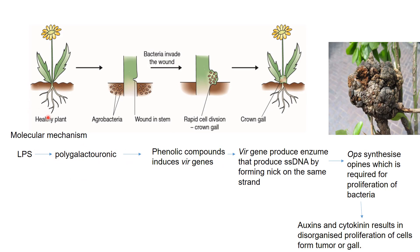The mechanism of how crown gall disease progresses: the healthy plant has no bacterium. Agrobacterium tumefaciens attaches on the stem of the plants as it is a soil bacterium. After attachment, it forms a wound in the stem. Then bacteria invade the wound, rapid cell division occurs, and the crown gall forms — a large tissue called the crown. It may be present in the stem or in the roots.